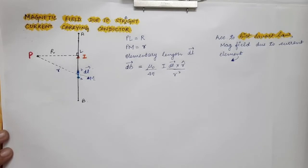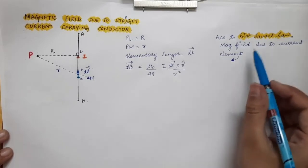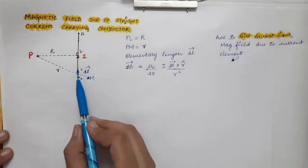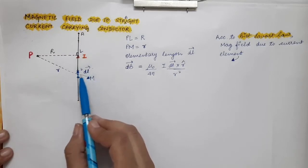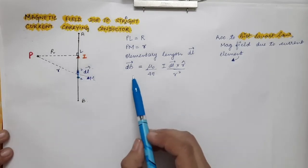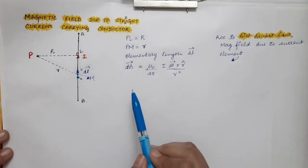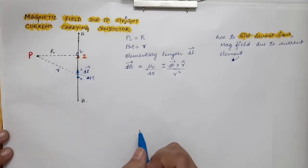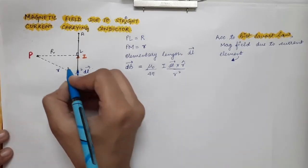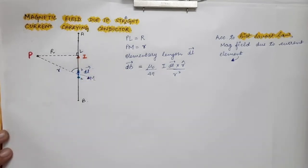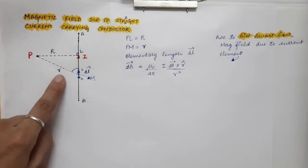This is the expression of Biot-Savart law. According to Biot-Savart law, the magnetic field due to current element DL vector at observation point P — this is the expression of magnetic field due to this elementary length at observation point P. Now let's suppose the angle between DL vector and R-cap.